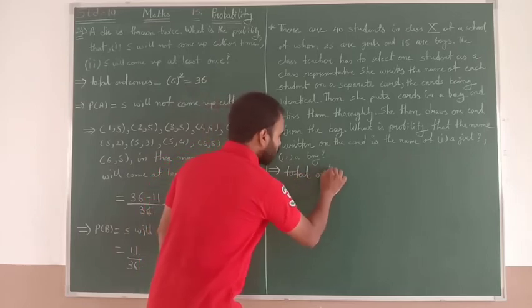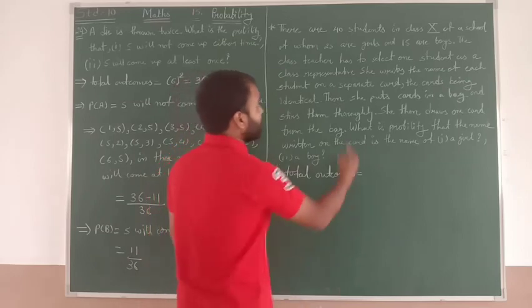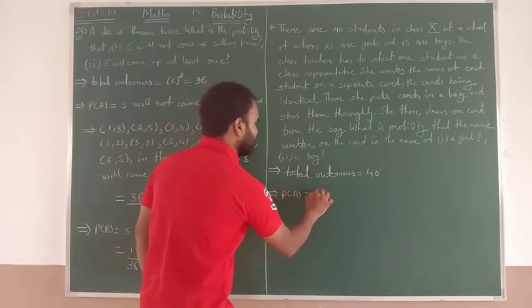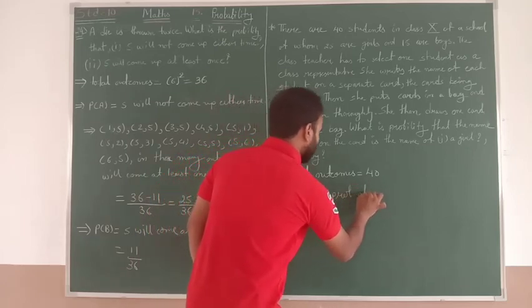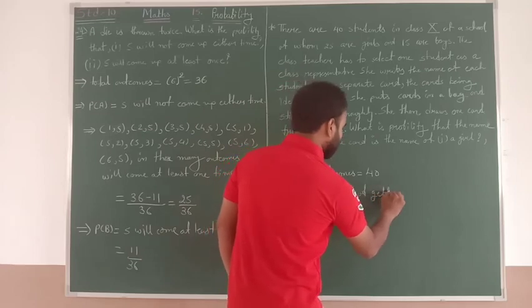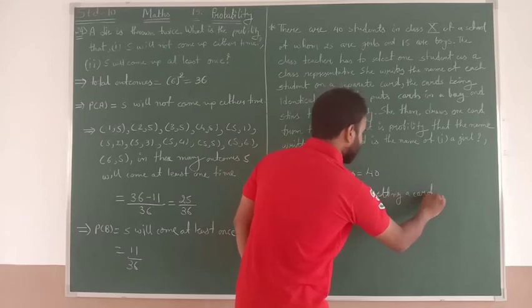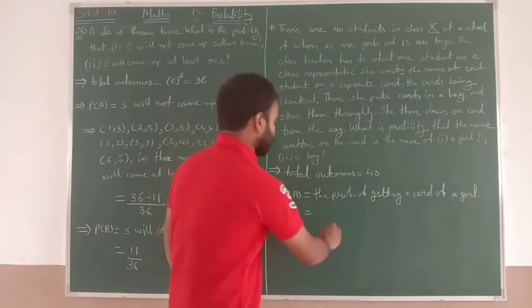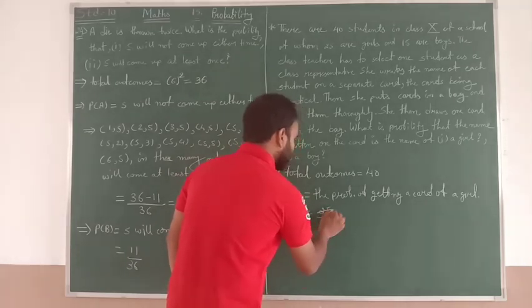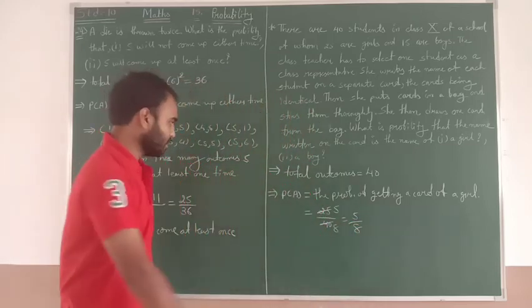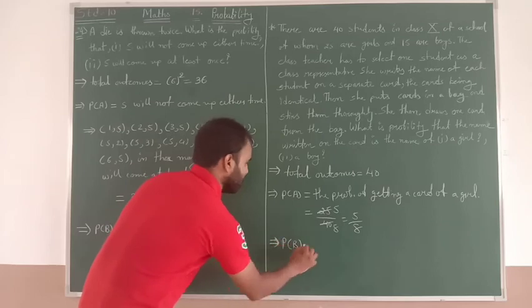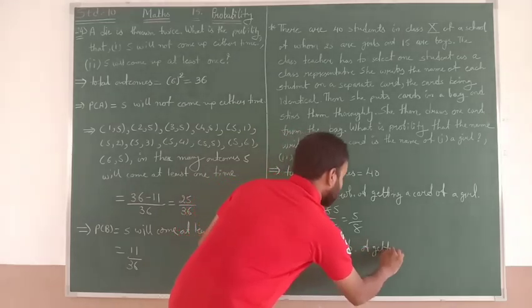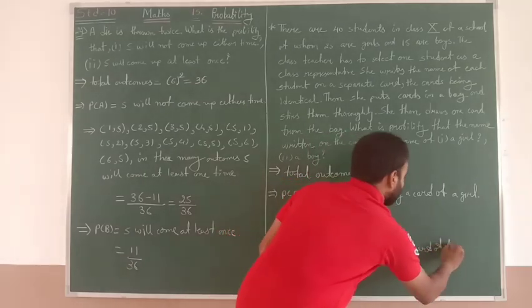What is the probability when the name written on the card is of a girl or a boy? So first of all, total outcomes will be 40, 25 girls and 15 boys. Now we need to find the probability of the first event, P(A): the probability that the selected card is of a girl. So how many girls are there? 25. So 25 by 40 equals 5 by 8. And P(B), probability of a boy, is 15 by 40 equals 3 by 8.